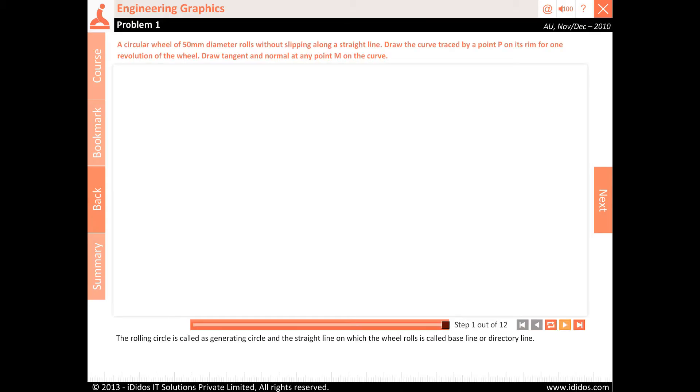The rolling circle is called the generating circle and the straight line on which the wheel rolls is called the baseline or directory line.